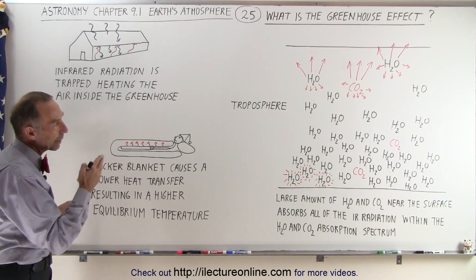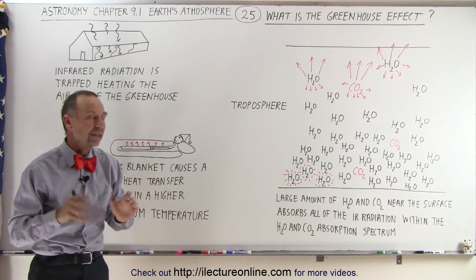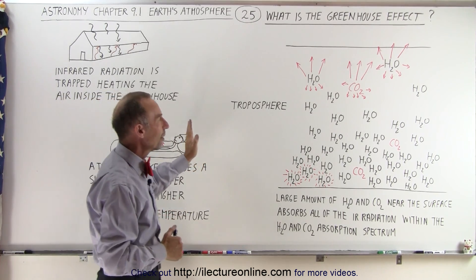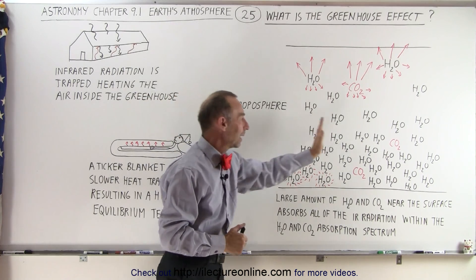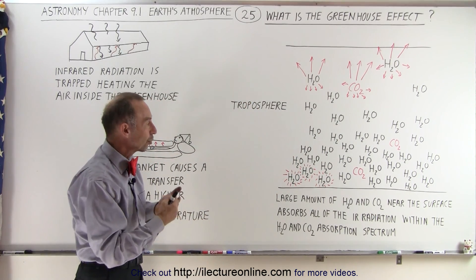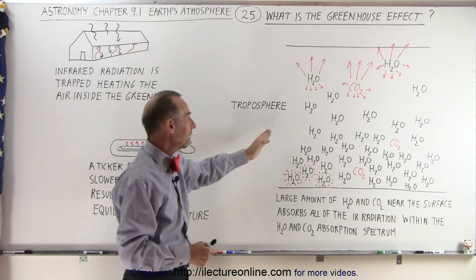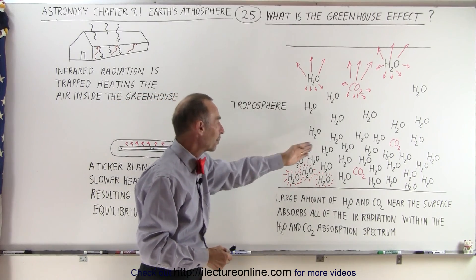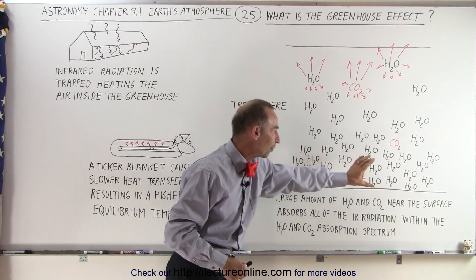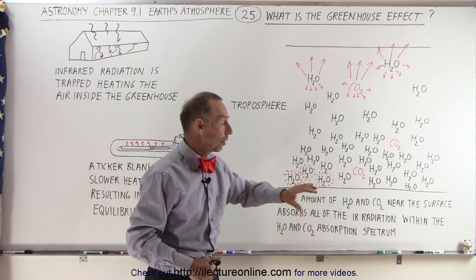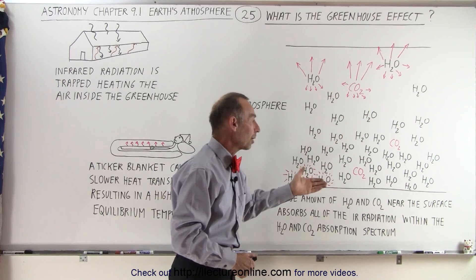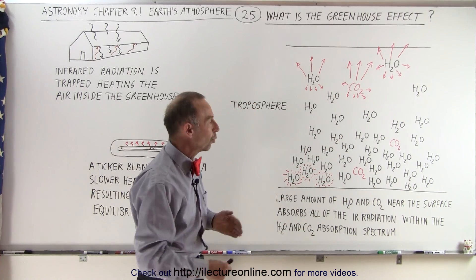Now in the atmosphere it's a little bit different, but the greenhouse effect is primarily caused by what we call the greenhouse molecules in the atmosphere — in the troposphere — and specifically water vapor and carbon dioxide. In the lower troposphere, the water molecules exceed the carbon dioxide molecules in number by more than 20 to 1.